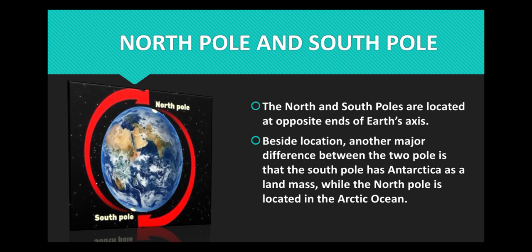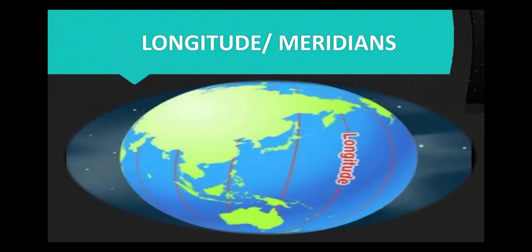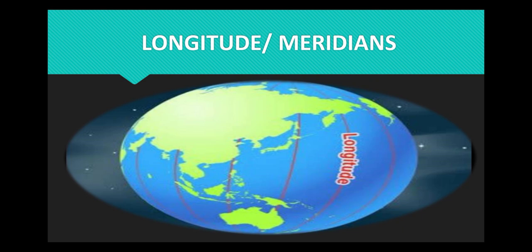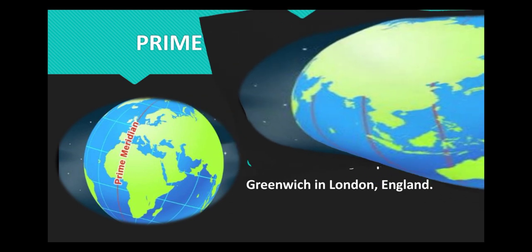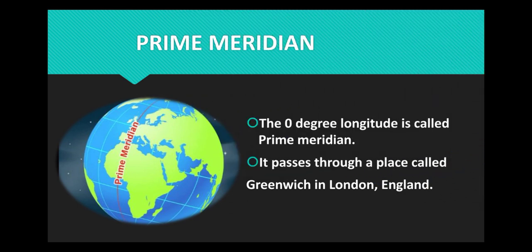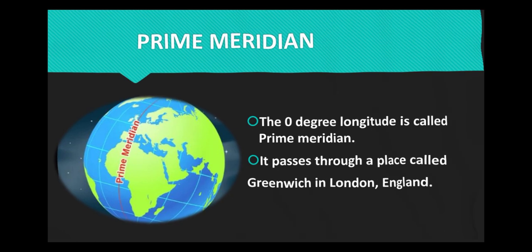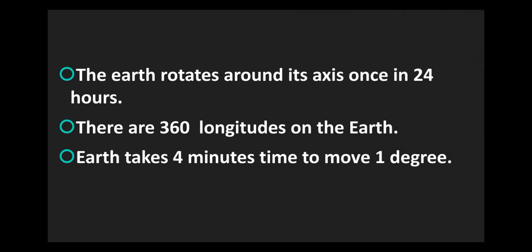Longitudes or meridians. These are the semicircles extended from the North Pole to the South Pole. The zero degree longitude is called Prime Meridian and it passes through a place called Greenwich in London, England. The Earth rotates on its axis once in 24 hours. There are 360 longitudes on the Earth. Earth takes four minutes time to move one degree.